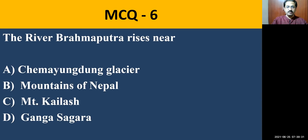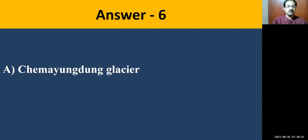MCQ question number six: River Brahmaputra rises near — Chimayamdang glacier, mountains of Nepal, Mount Kailash, or Ganga Sagar. The correct answer is Chimayamdang glacier.